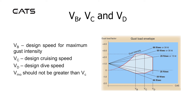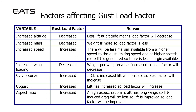Factors affecting gust load factor. Increased altitude will decrease the gust load factor, because there is less lift at altitude, which means load factor decreases. Increased mass decreases load factor — weight is more so load factor is less. Increased speed increases load factor, as there is less margin available from a higher speed to the gust limiting speed and more lift is generated. Increased wing loading decreases load factor — the weight per wing area has increased so load factor will decrease.